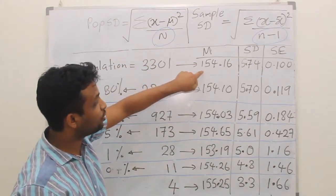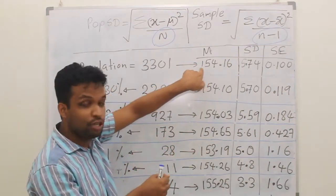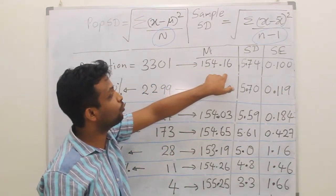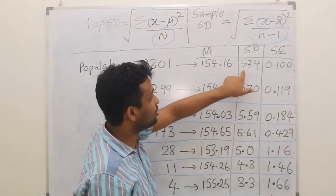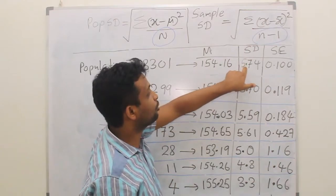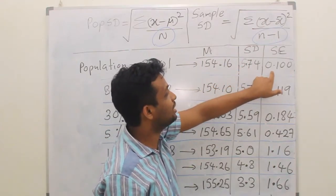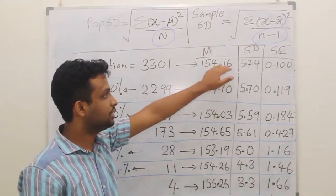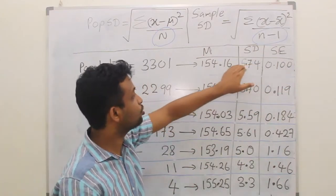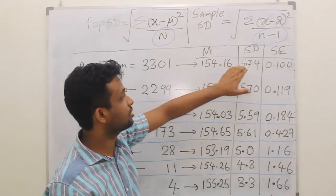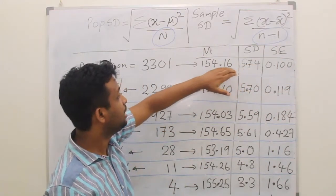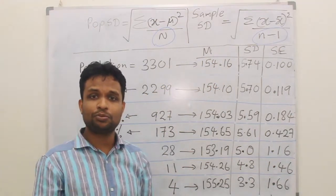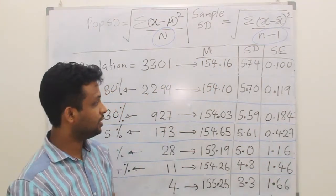For this population, the population mean mu is 154.16, the standard deviation is 5.74, and the standard error is 0.1. These are constants — the population mean and population standard deviation are both fixed constants.